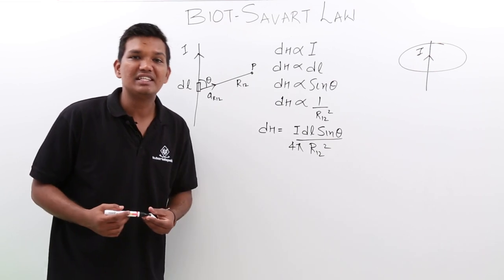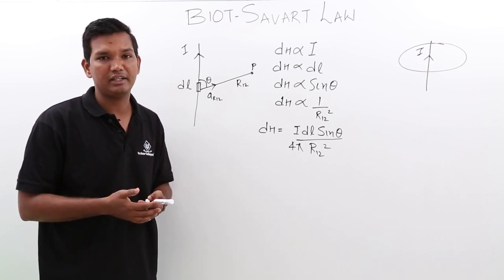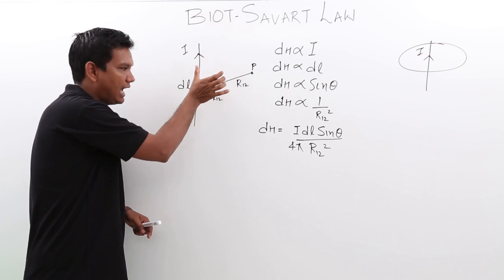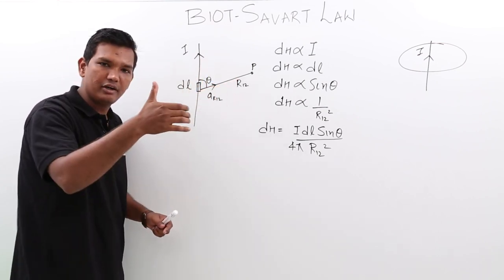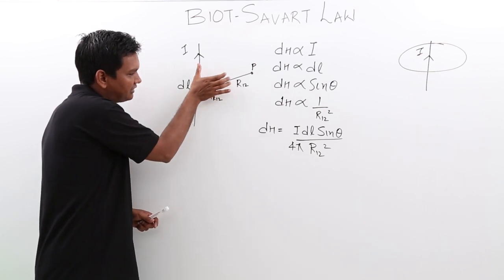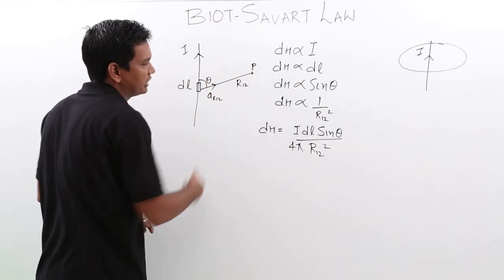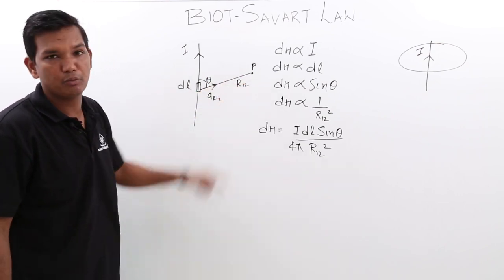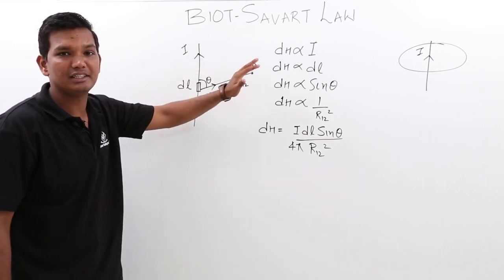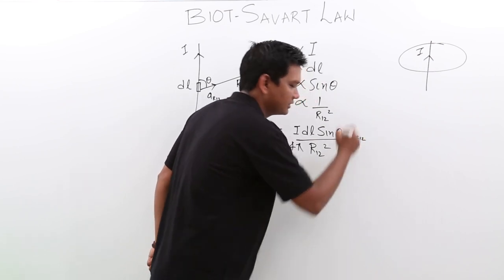As with the electric field, the magnetic field also has a direction. To find the direction, point your thumb in the direction of the current and rotate your fingers — this gives a circular pattern. The magnetic field at any point would be going either inside or outside the plane. So the magnetic field intensity direction is normal to the plane in which it lies, and that direction is represented by the unit vector a_r12.